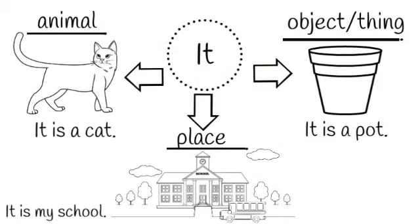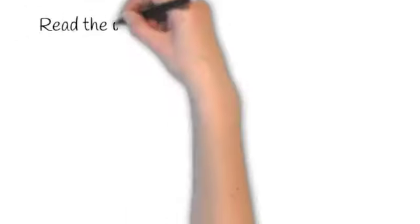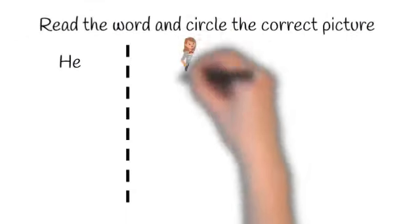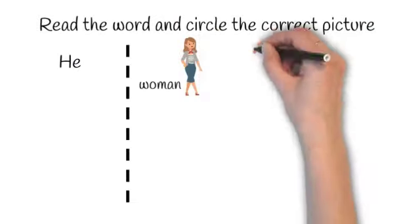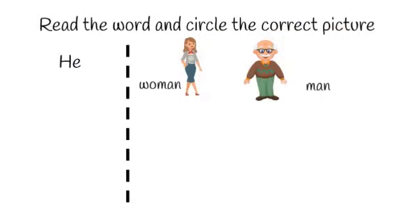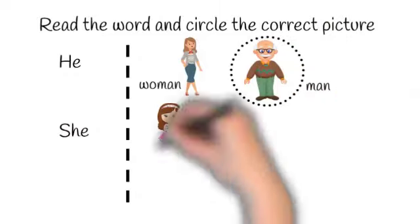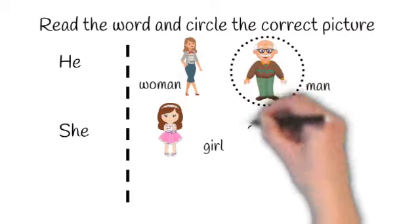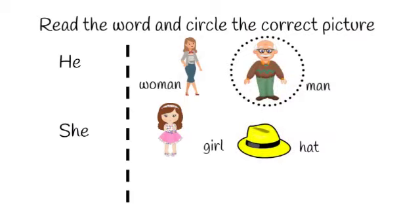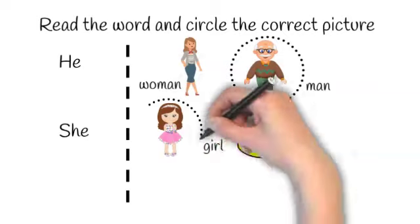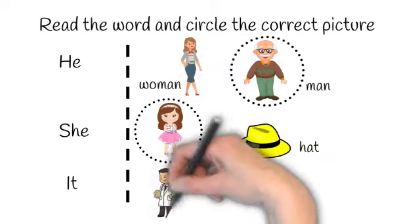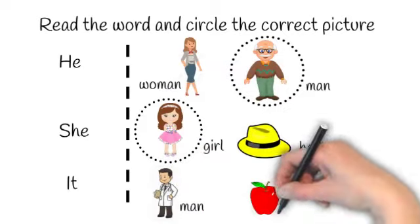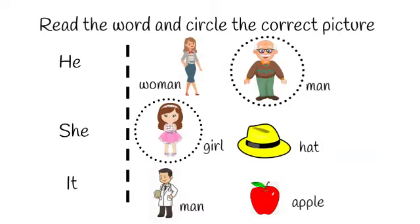To explain better, let me give you some examples. Read the word and circle the correct picture. The word is he, and there is a picture of a woman and a picture of a man. He is used for a man, so we will circle man. Next, the word is she, and there is a picture of a girl and a picture of a hat. She is used for a girl, so we will circle girl. Next, it is written and there is a picture of a man and an apple. It is used for a thing, so we will circle the apple.